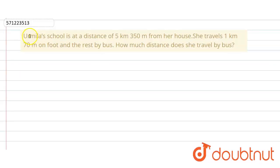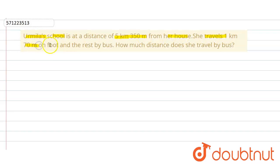In the given question, Urmila's school is at a distance of 5 km from her house. She travelled 1 km on foot and the rest by bus. We have to find how much distance she travels by bus.